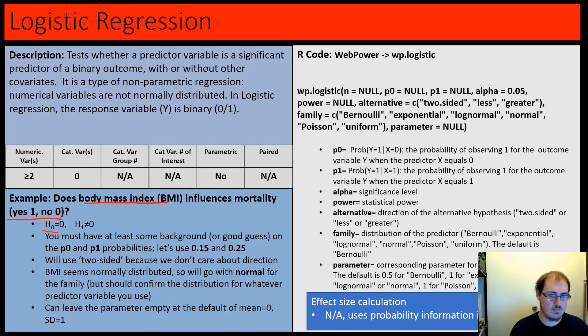Our null would be there is no effect, and the alternative would be otherwise. There's a lot going on with this R code, so we'll do our best to walk through it. We're using WebPower, and then wp.logistic. The first big thing we need here is two probabilities.